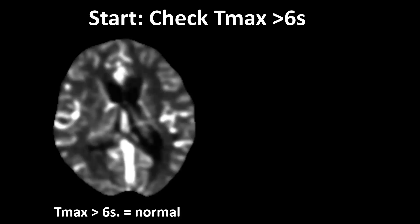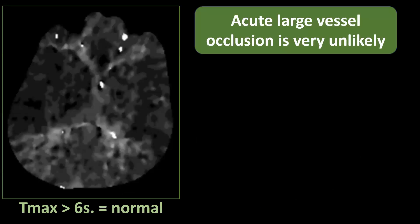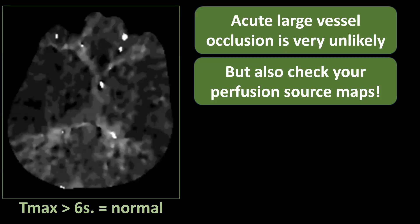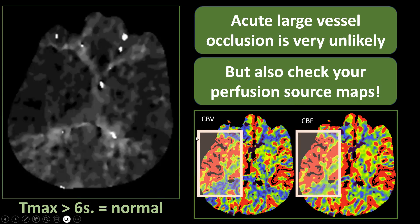The Tmax >6 seconds map can be either completely normal — which is reassuring — or abnormal. With a normal Tmax map, an acute large vessel occlusion is very unlikely. Nevertheless, we should examine CT angiography and non-contrast enhanced CT, and definitely check our other perfusion source maps, because these can sometimes provide a clue to the diagnosis. For example, a patient can have seizure-related perfusion abnormalities, like hyperperfusion in the right perisylvian region, as visible on the cerebral blood volume and cerebral blood flow maps.